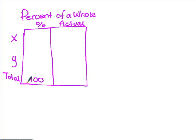Any time we're finding percent of a whole, we've always got two columns — a percent and an actual — and then we always have a total, along with the two things that we're comparing. The rest of the information can be filled in as provided.